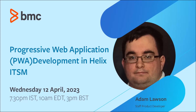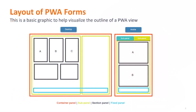The first thing I wanted to go over today is the layout of PWA and how a PWA form might actually work. This is a basic graphic that helps you visualize the outline of the PWA view. We have a couple of key points here. First, you have container panel holders — that's the red outlined item. You also have sub panel holders — that's the yellow outlined item. You have section panel holders — these are the black outline items. This is what you will work with most often, so be aware of those. You also have fixed panels — those are the blue options.